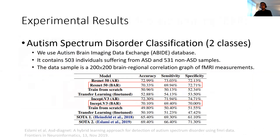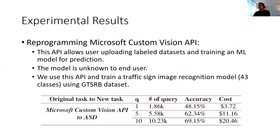As an example, we reprogram an ImageNet source model for autism spectrum disorder classification, where the target domain data is correlation graphs between different brain regions. With this simple technique we achieve very high accuracy, even better than state of the art without sophisticated data augmentation. We ran the reprogramming on an actual custom vision API, and it only costs about 20 US dollars to obtain a good model for autism spectrum disorder classification.